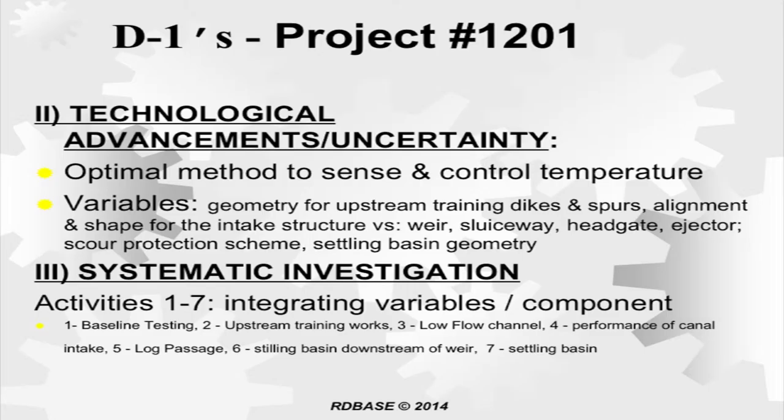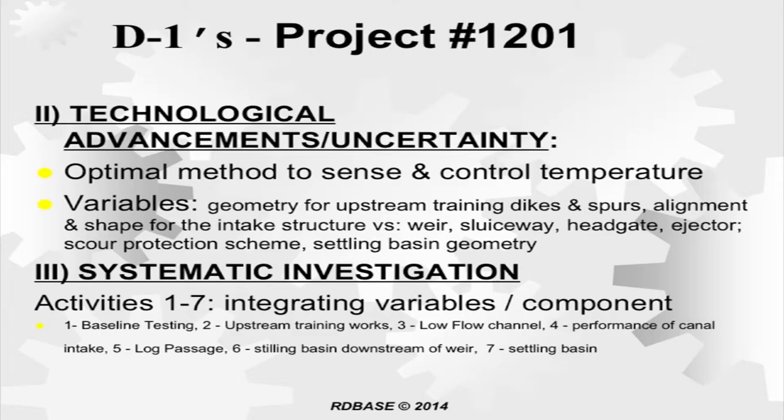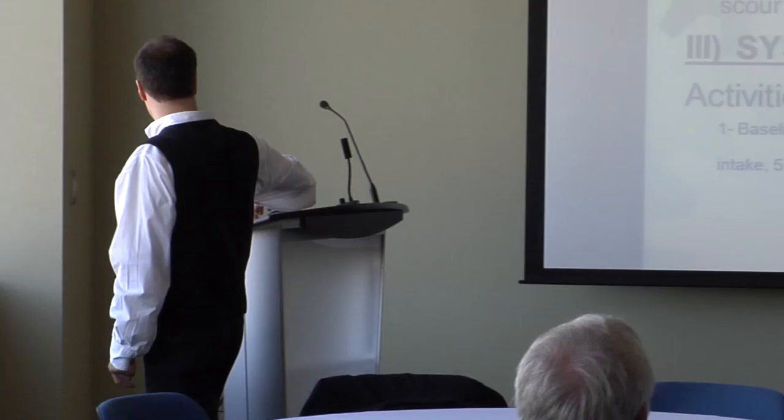These were professional engineer PhDs, very good at dealing with theoretical models — not typically the kind of claim CRA would challenge. They outlined seven different activities including baseline testing, upstream training, low-flow channel development, intake performance, handling of debris like logs, a stilling basin, and a settling basin, plus issues around how one component's design would have upstream or downstream effects on others — system uncertainty.